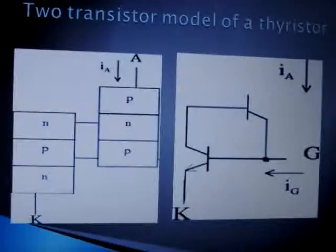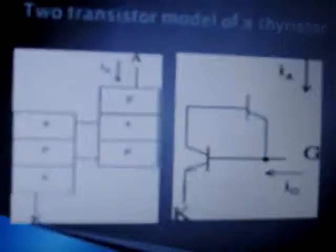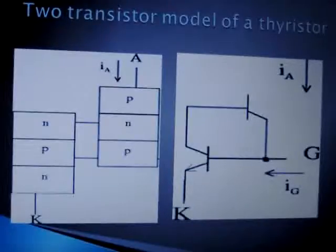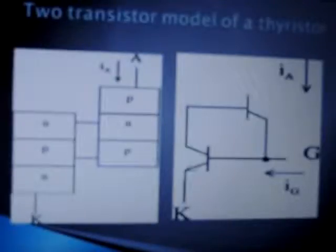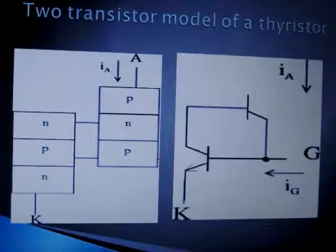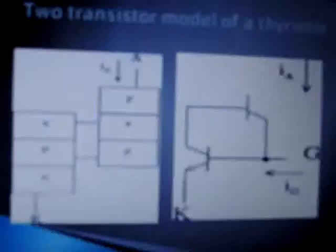This is the two-transistor model of a thyristor. The important thing to note is that you cannot physically make a thyristor by combining two transistors, but to understand its working, it can be represented by two transistors — one PNP and one NPN — as seen in the figure. The uppermost terminal is the anode, the lowermost is the cathode, and the common connection between the base of the lower transistor and the collector of the upper one is the gate terminal.